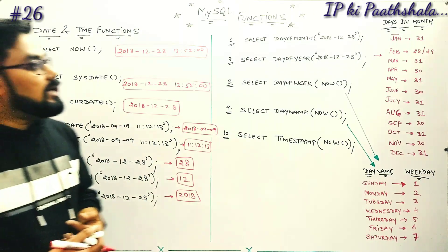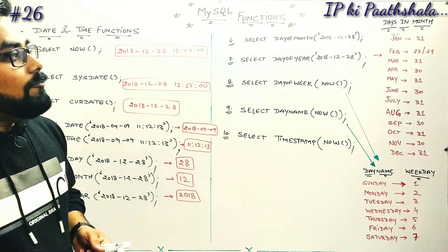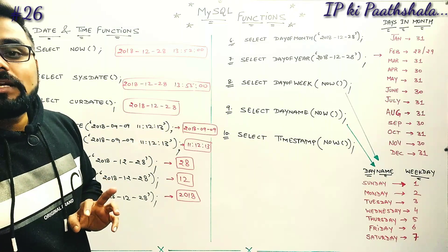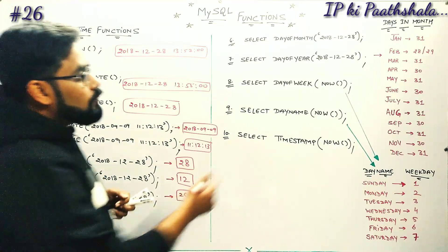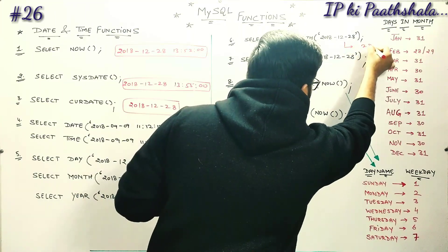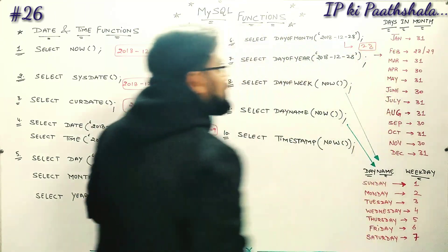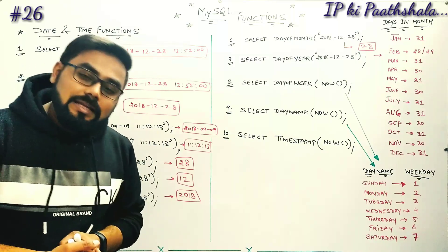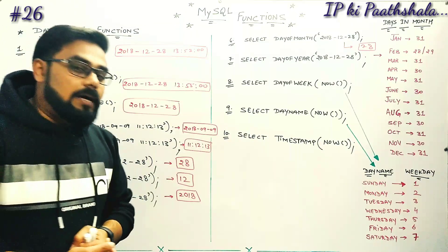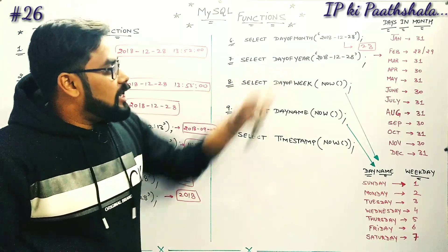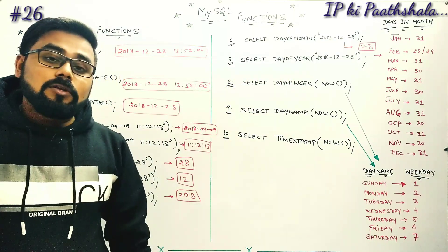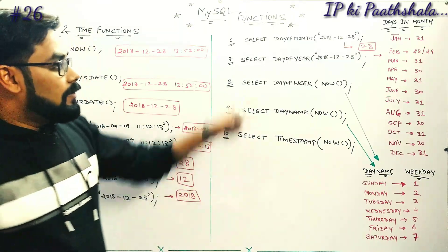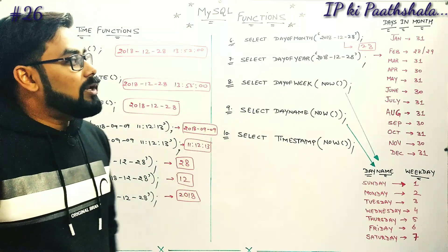Next, we are going to look at SELECT DAYOFMONTH(). DAYOFMONTH() is nearly similar to DAY() function — this function shows us the day of the month, which is particularly 28, because it is the 28th day of the month. Next we talk about the YEAR() function. Using the date 2018-12-28, the year returned is 2018.